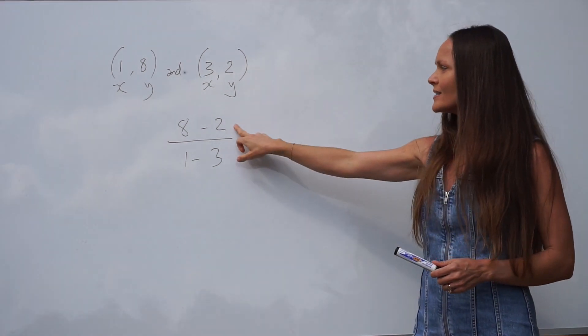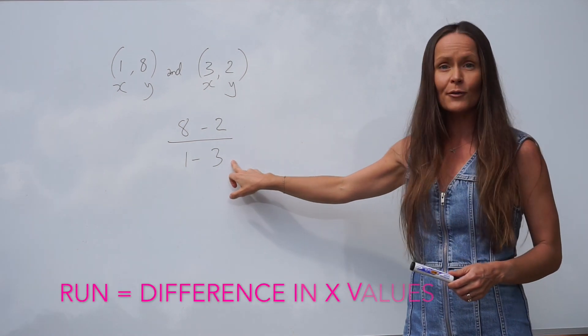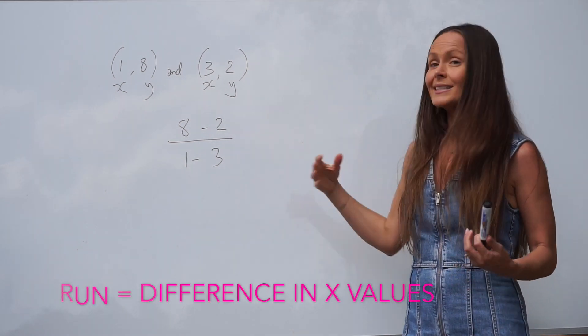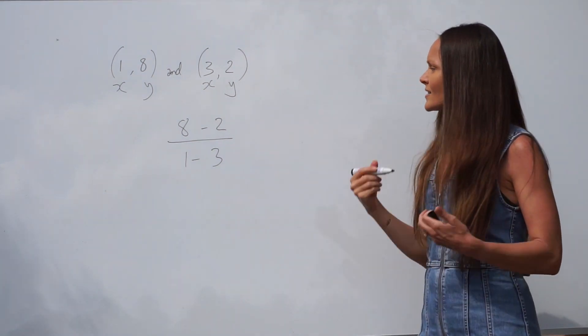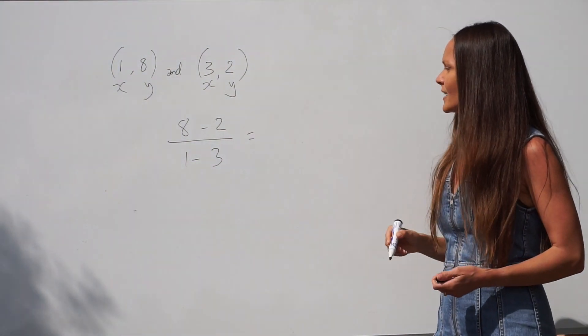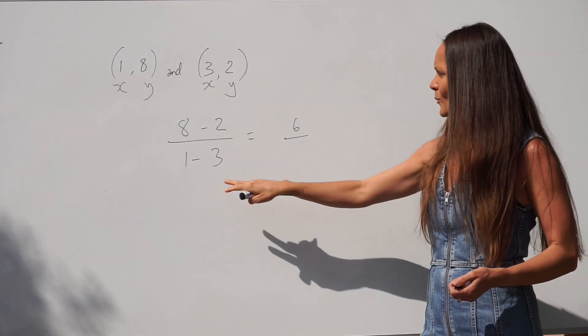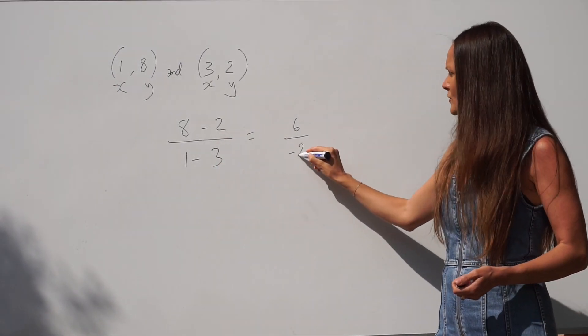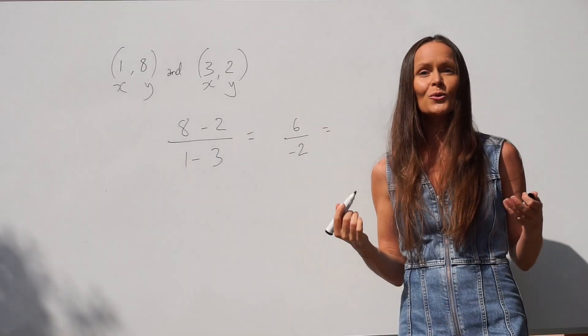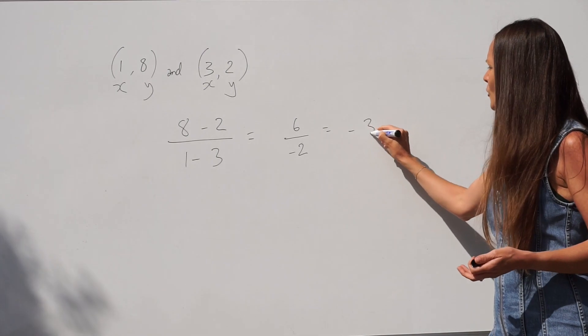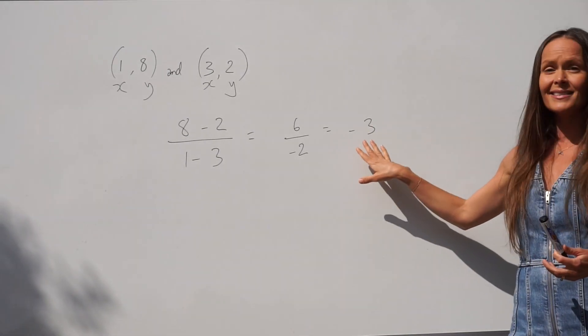The rise is the difference in the y values and the run is the difference in the x values. Difference just means subtract. So let's calculate this to work out the gradient. 8 take away 2 is 6, and underneath, 1 take away 3 is negative 2. This simplifies because 6 divided by negative 2 is negative 3. So we've worked out the gradient of our straight line. The gradient is negative 3.